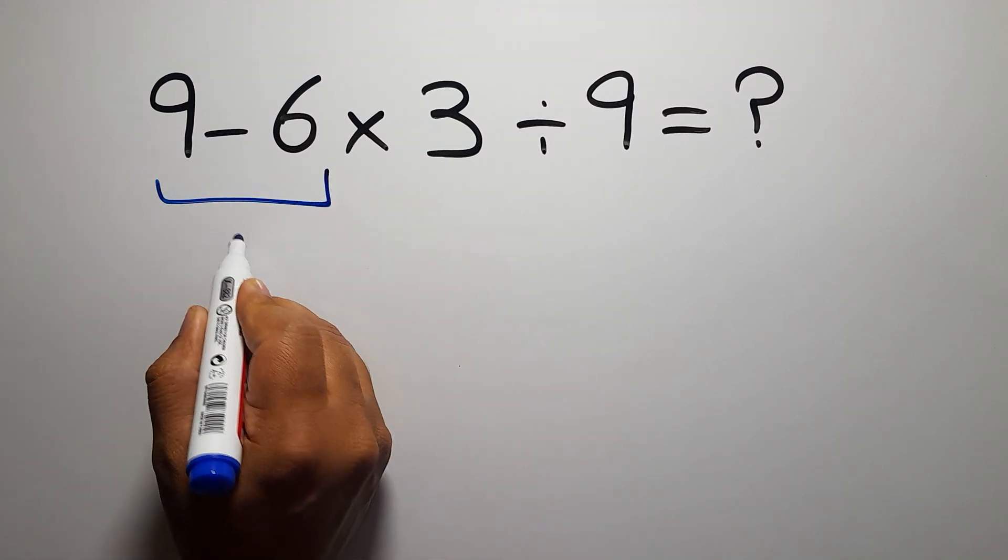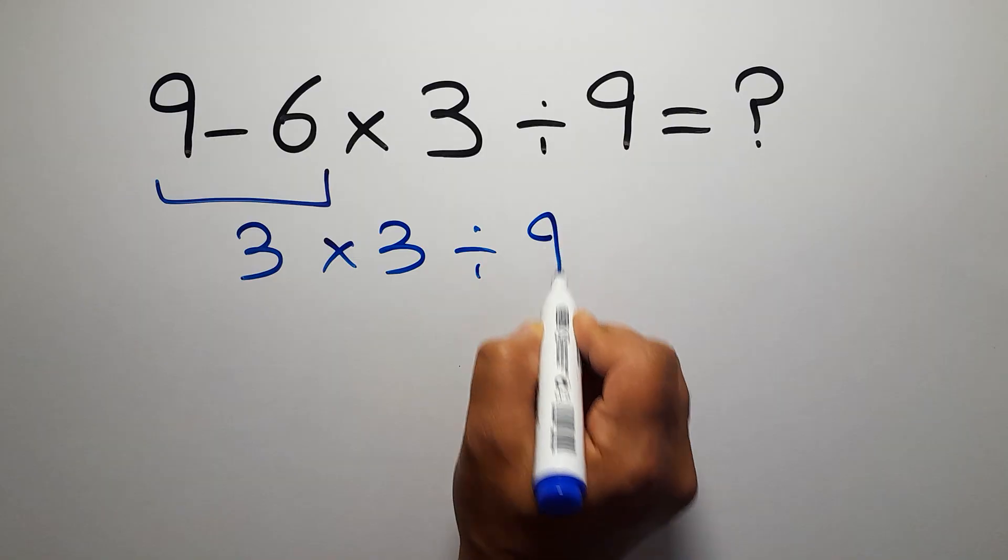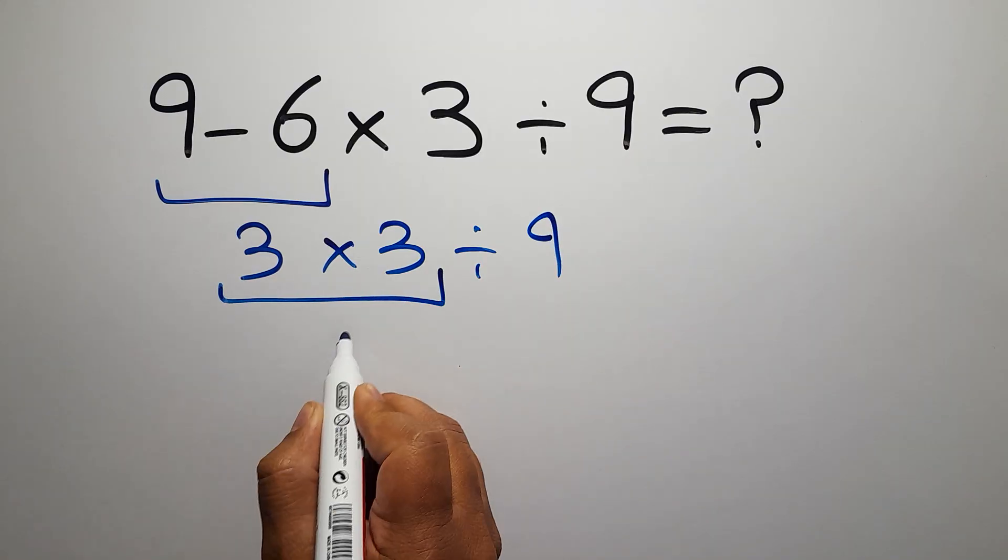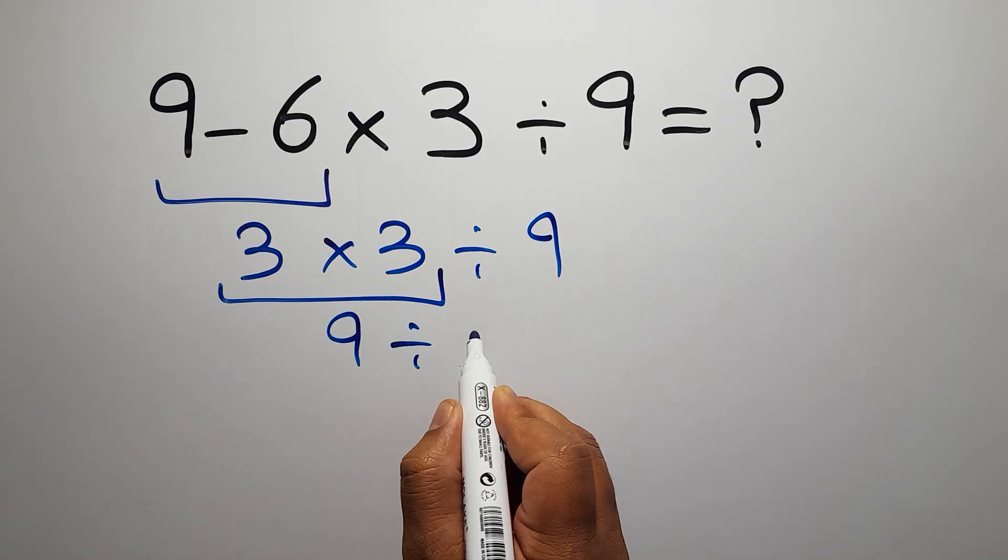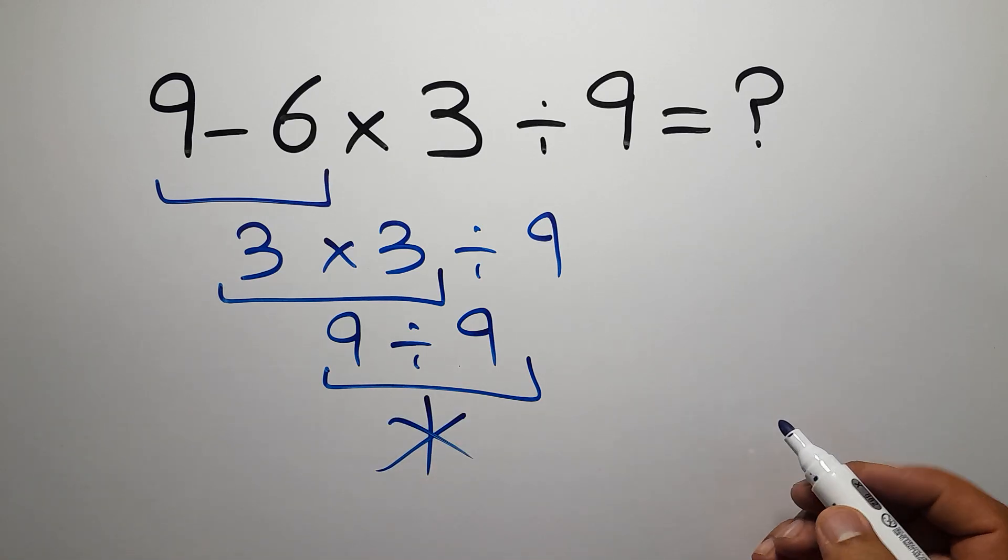9 minus 6 gives us 3, so 3 times 3 divided by 9. 3 times 3 is just 9, and 9 divided by 9 equals 1. But this answer is not correct because according to the order of operations, first...